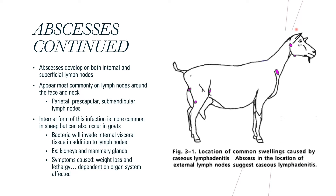The internal form of this infection is actually more common in sheep but can also occur in goats, where the bacterium infects internal visceral and lymphoid tissue such as that found in the kidneys or the mammary glands and does not cause superficial abscesses. However, when this happens, symptoms will include weight loss and lethargy and can be more challenging to diagnose since other clinical signs will be dependent on the major organ systems that are affected.